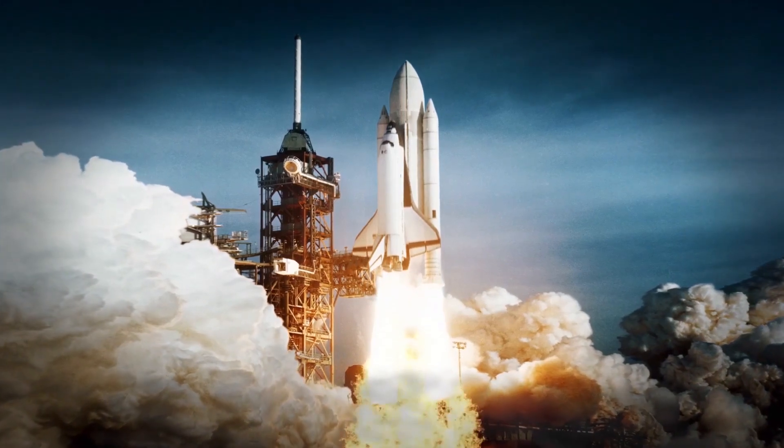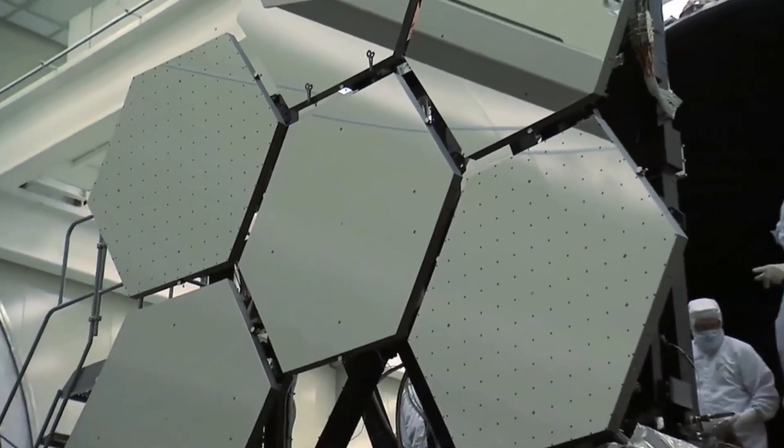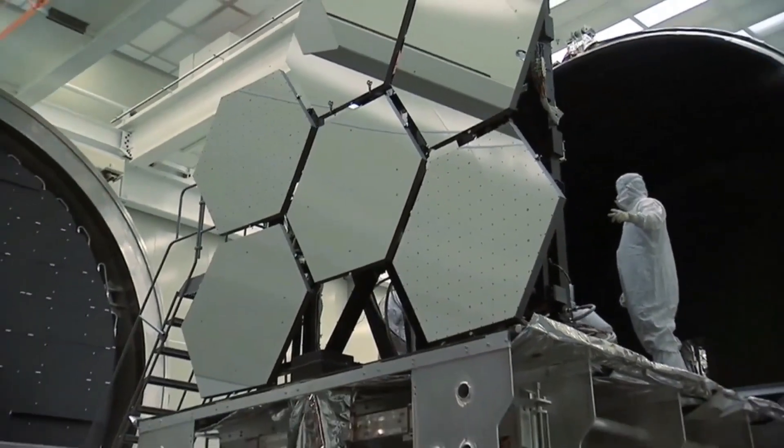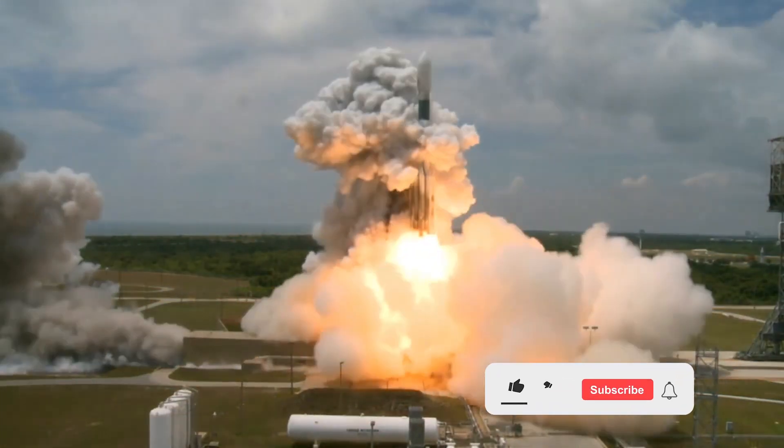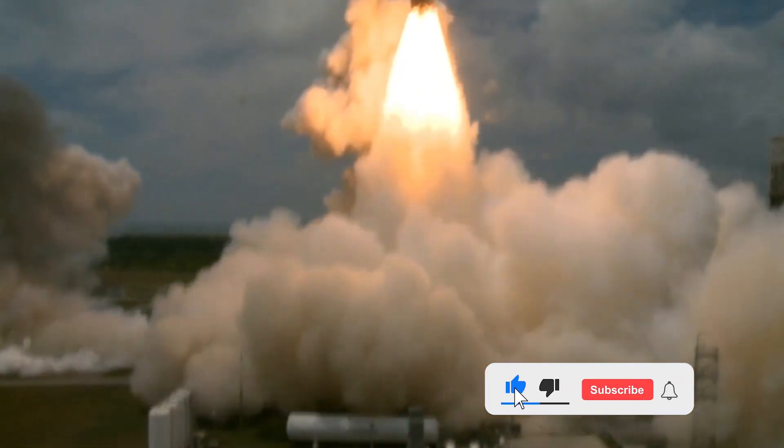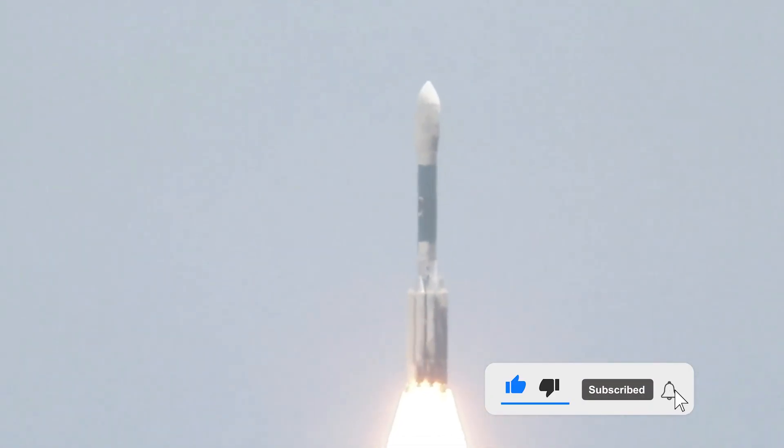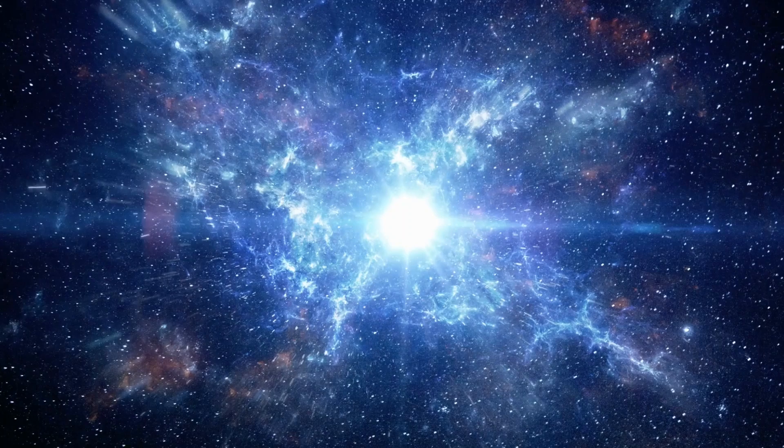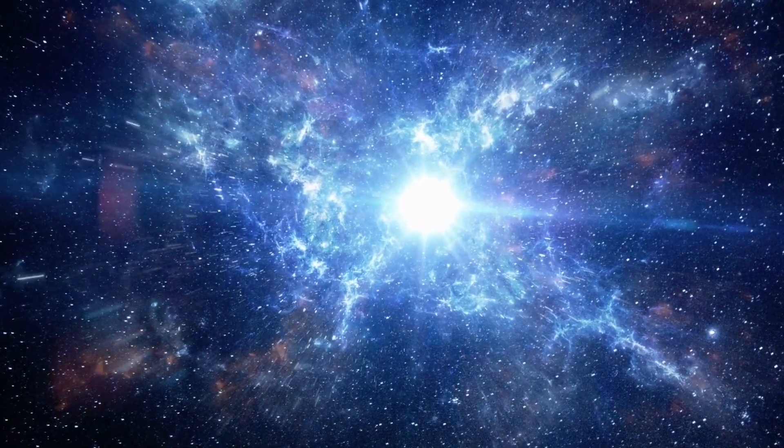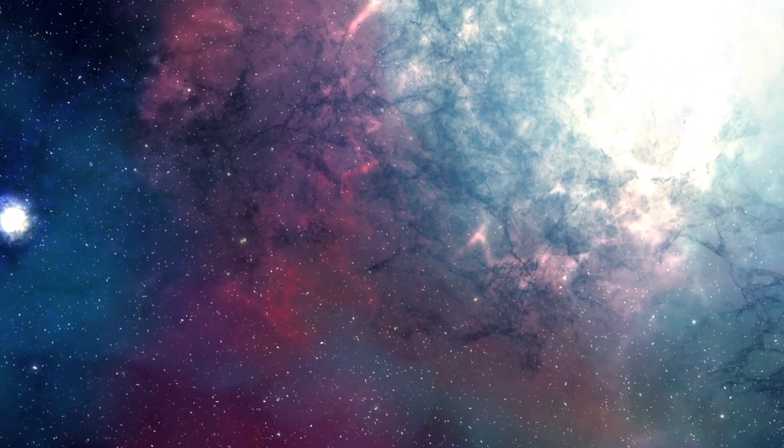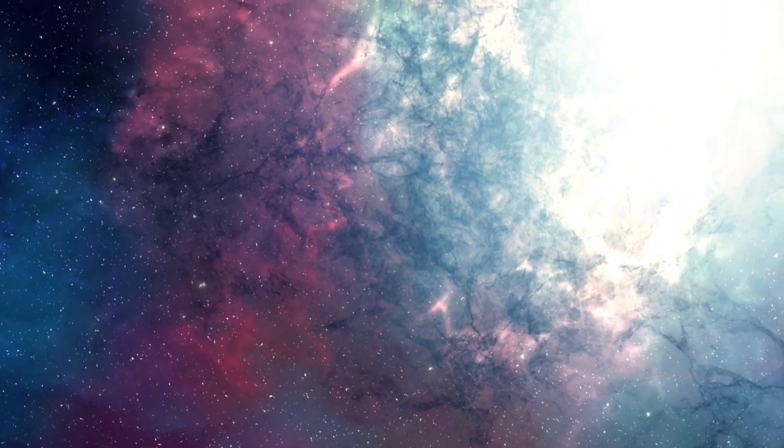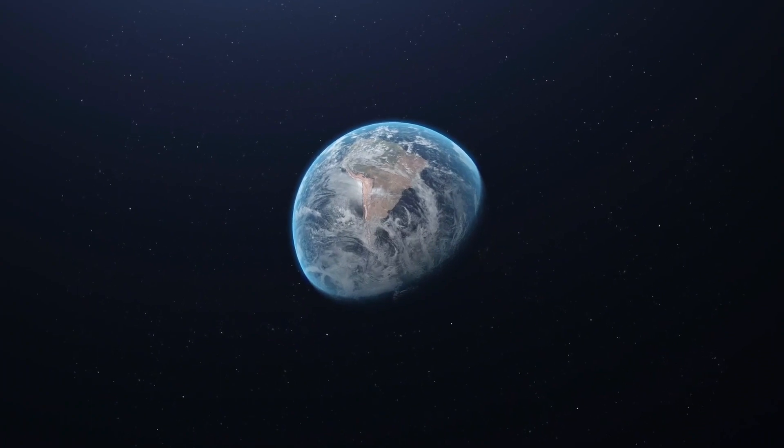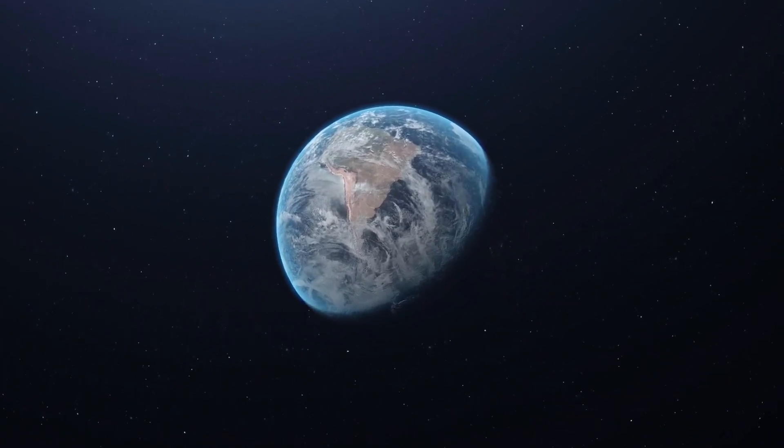The launch of the James Webb Space Telescope was one of the most exciting things to happen to astronomy for decades. The much-anticipated space observatory was launched into orbit in December of 2021 after many years of development, delays, and controversy. Now, after decades of waiting, the telescope has finally taken its first few images, and initial reports state that the telescope has detected evidence of artificial lights. Let's take a look at these reports and what they mean for humanity.